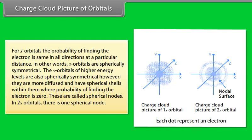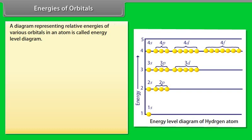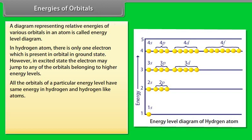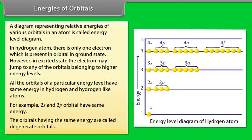A diagram representing the relative energies of various orbitals in an atom is called an energy level diagram. In the hydrogen atom, there is only one electron present in the orbital in the ground state. In the excited state, the electron may jump to any of the orbitals belonging to higher energy levels. All orbitals of a particular energy level have the same energy in hydrogen and hydrogen-like atoms — for example, 2S and 2P orbitals have the same energy. Orbitals having the same energy are called degenerate orbitals.